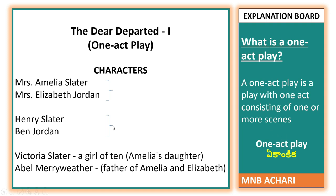The characters are Mrs. Emilia Slater, Mrs. Elizabeth Jordan, Henry Slater, Ben Jordan, Victoria Slater, and Abel Merriweather. Mrs. Emilia and Elizabeth are sisters. Henry Slater is Emilia's husband and Ben Jordan is Elizabeth's husband. Victoria Slater is a 10-year-old girl and Emilia's daughter. There is also a character called Jimmy, but Jimmy has no role played in this abridged version of the drama.